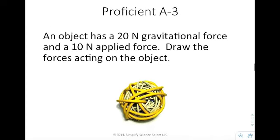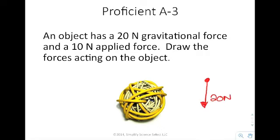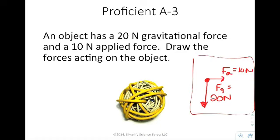The next one says: an object has 20 newtons of gravitational force and a 10-newton applied force — draw the forces acting on the object. The gravitational force is 20 newtons, so we draw it downward. The 10-newton applied force can be drawn in any direction. As long as you label it "applied force, 10 newtons" and "gravitational force, 20 newtons," that would be a valid answer. If you drew your applied force in a different direction, that'd be okay as well.